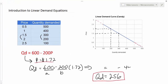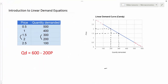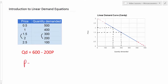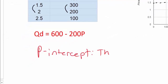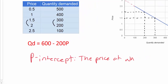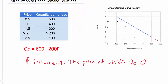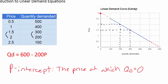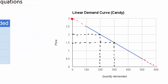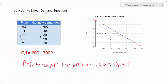That brings me to another point: how to calculate the price intercept of demand. The P-intercept is the price at which quantity demanded equals zero — it is where the demand curve ends. This one's pretty obvious here; we can see the demand curve would begin at three dollars, meaning at a price of three dollars, zero candy would be demanded among my students. But what if we did not have a simple line intersecting the P-axis at a very obvious point? We could always solve for the price intercept by setting the quantity demanded to zero.